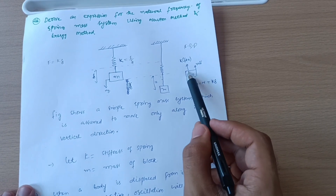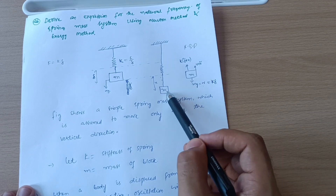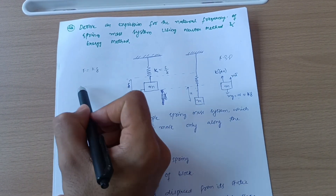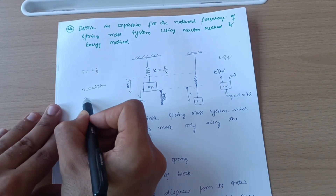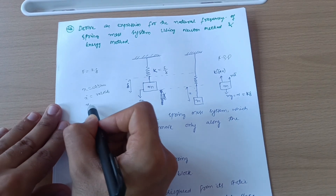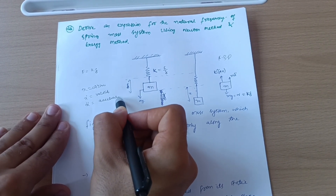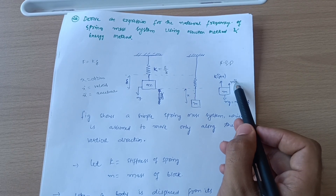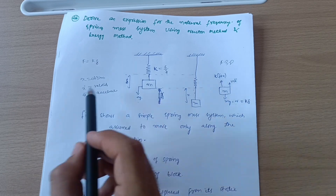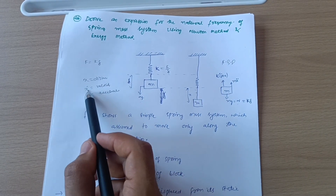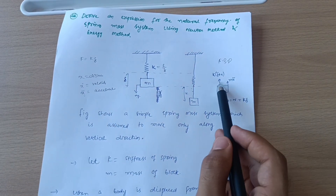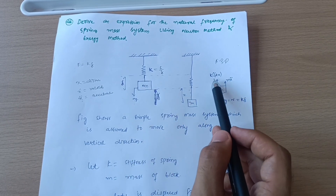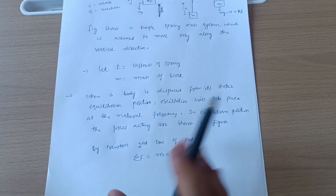Two forces act against the motion of the body. The first is the inertia force, which equals m·ẍ (m times x double dot). Here x is distance, x-dot is velocity, and x double dot is acceleration. As per Newton's second law, force equals mass times acceleration, so m·ẍ is the inertia force. The second force is k times (delta + x), where delta plus x is the displacement of the body and spring.